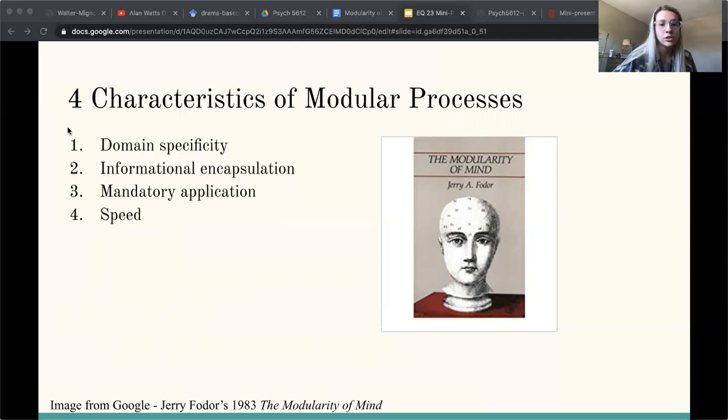Mandatory application—so cognitive modules respond automatically to stimuli. For example, if we're looking at a visual illusion, we know that we see an illusion after we look at it for a while, but we still perceive an illusion. The illusion does not go away; we still perceive it, but we know that we're still looking at an illusion.